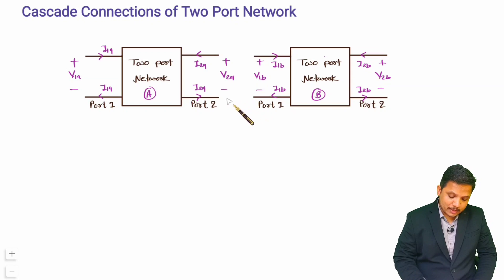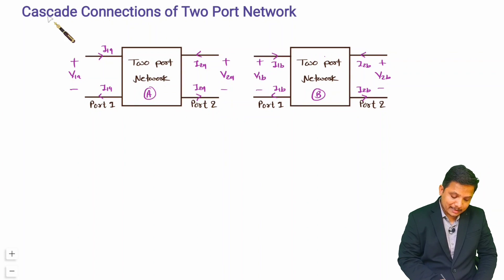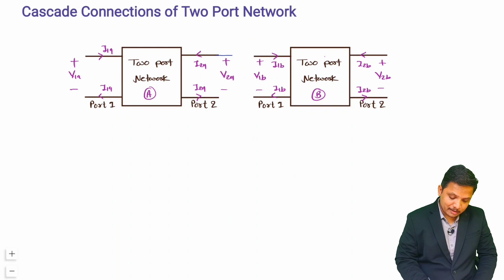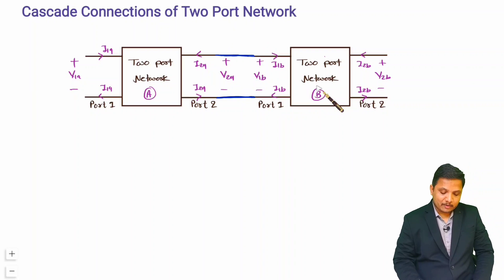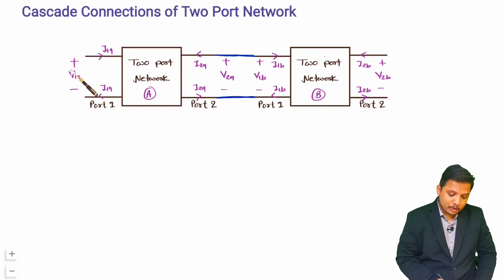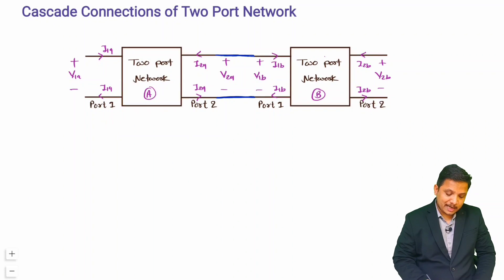Now we will provide the cascaded connection. For cascade connection we simply need to connect the two terminals together — I am connecting them here. This is the cascade connection of two two-port networks. Now I'll explain the equivalent two-port network of this cascaded connection.